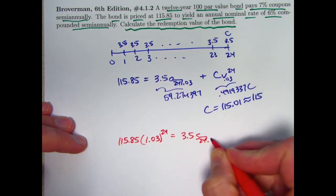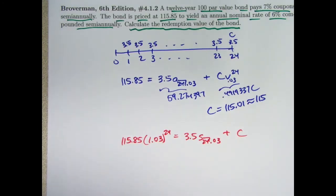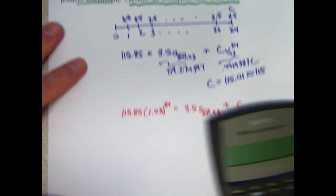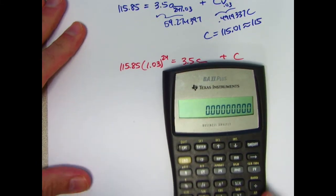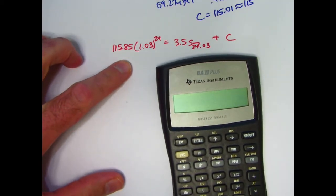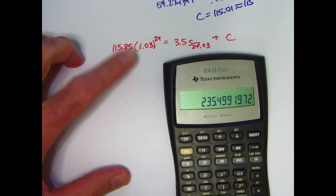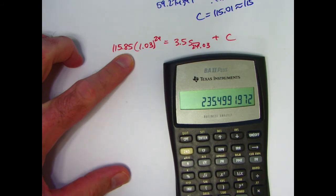24 of those at interest rate 0.03, plus C, which is at time 24, so I can just write it as C. 1.03 to the 24th power, times 115.85. This is about 235.50. Store that in register 1.